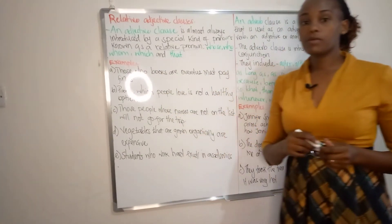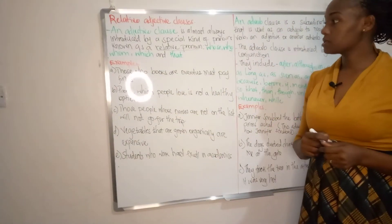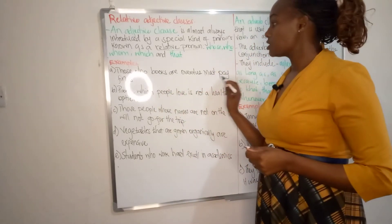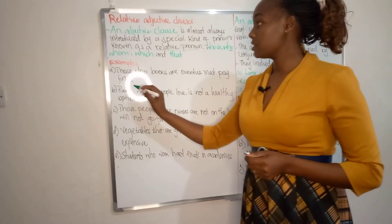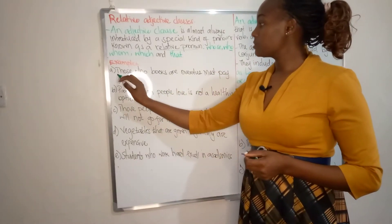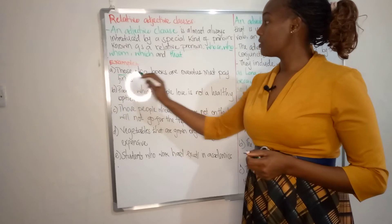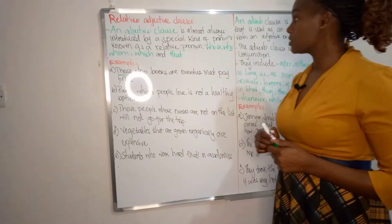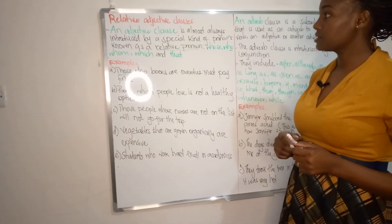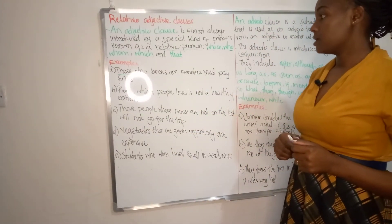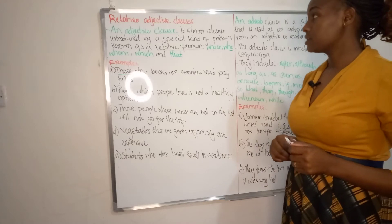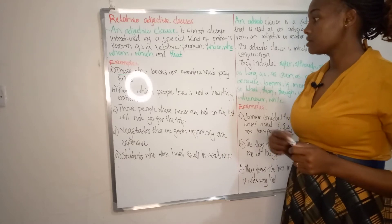Examples in sentences. 'Those whose books are overdue must pay fines.' You will notice that it has been introduced by the word 'whose', which is a relative pronoun, and thus it is our adjective clause.